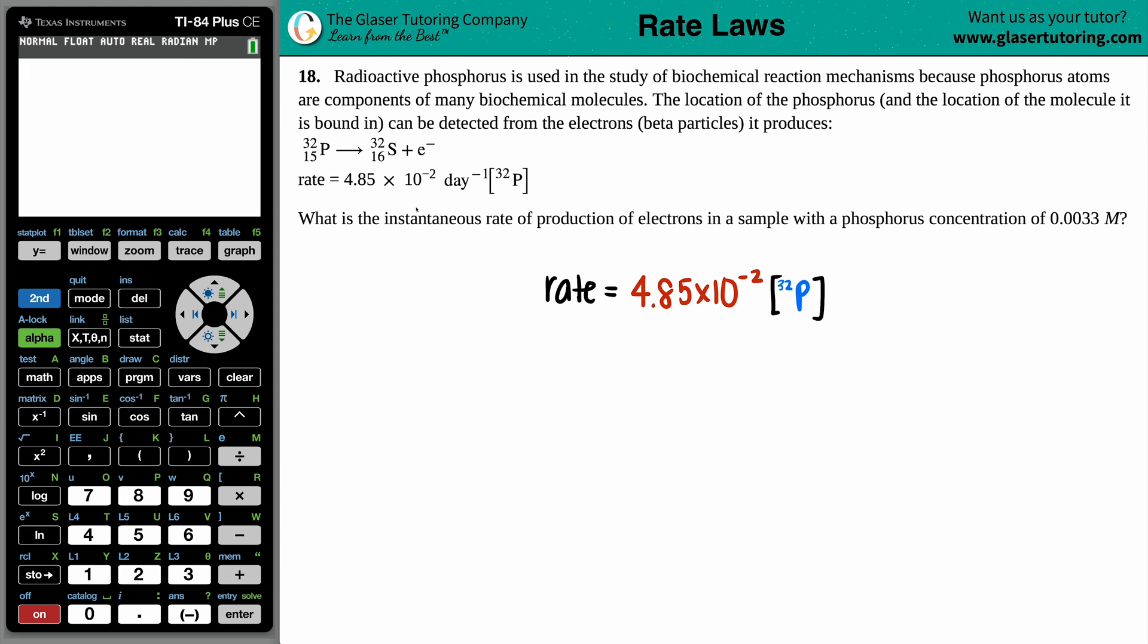Now, the question is saying, what is the instantaneous rate of production of electrons in a sample with a phosphorus concentration of 0.0033 molarity?